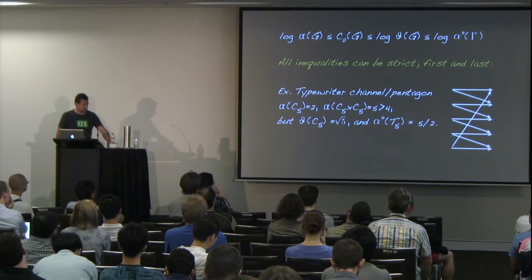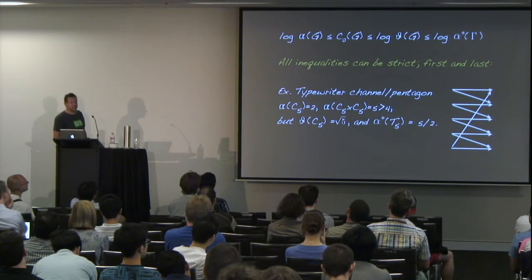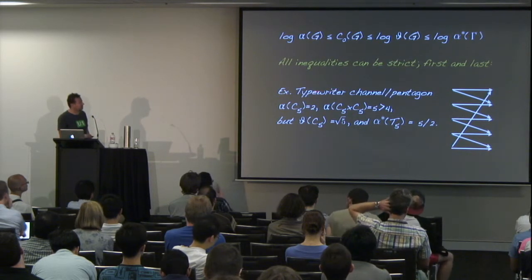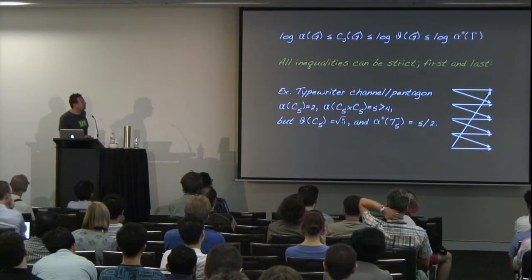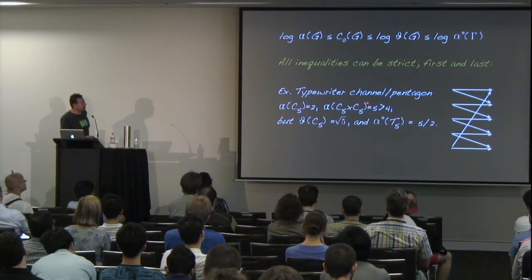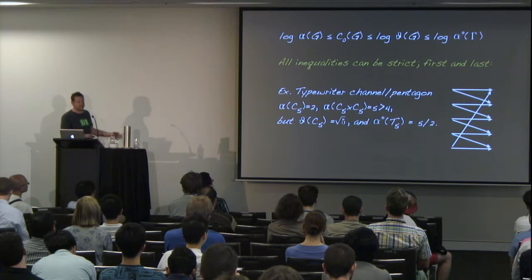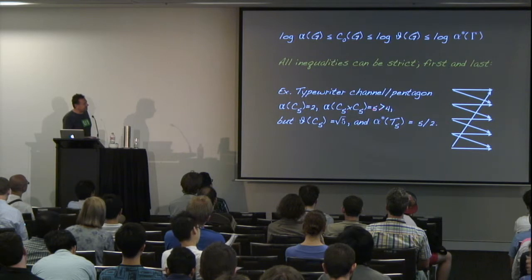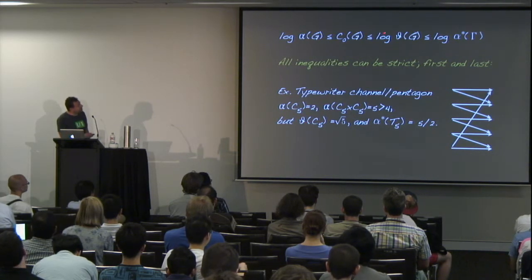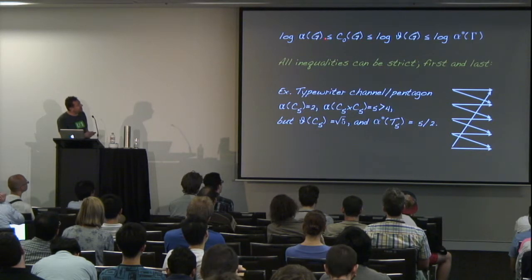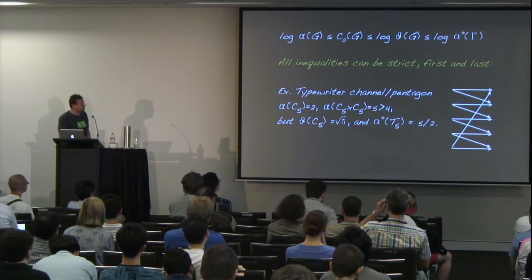All of these inequalities can be strict, and simple examples suffice. For the pentagon graph C5: the independence number alpha(C5) = 2, and alpha(C5 ⊗ C5) = 5, which is already bigger than 2×2, showing super-multiplicativity. On the other hand, theta(C5) = √5, so C0 = (1/2) log 5, meaning this is an equality, but alpha < theta is strict. The fractional packing number of C5 is 5/2, which is bigger than √5, so the last inequality is also strict.